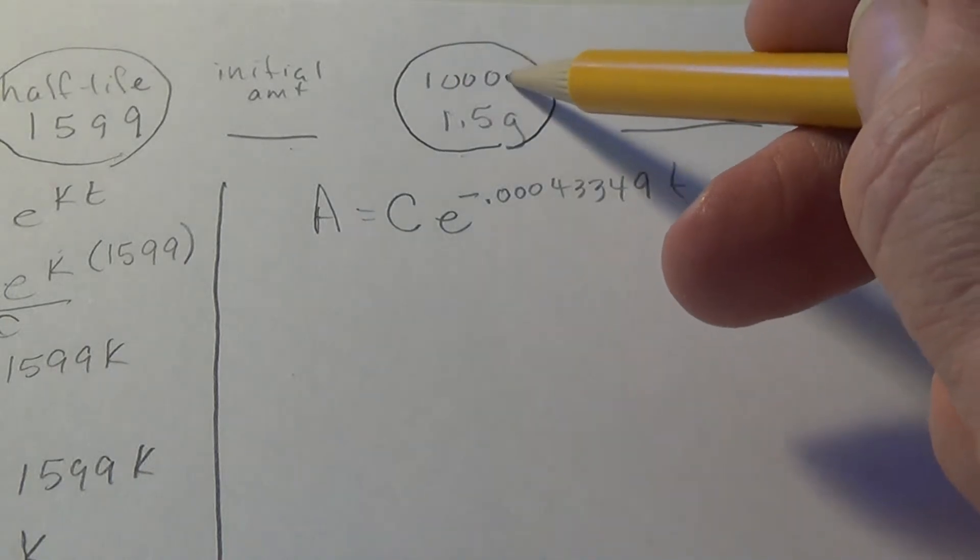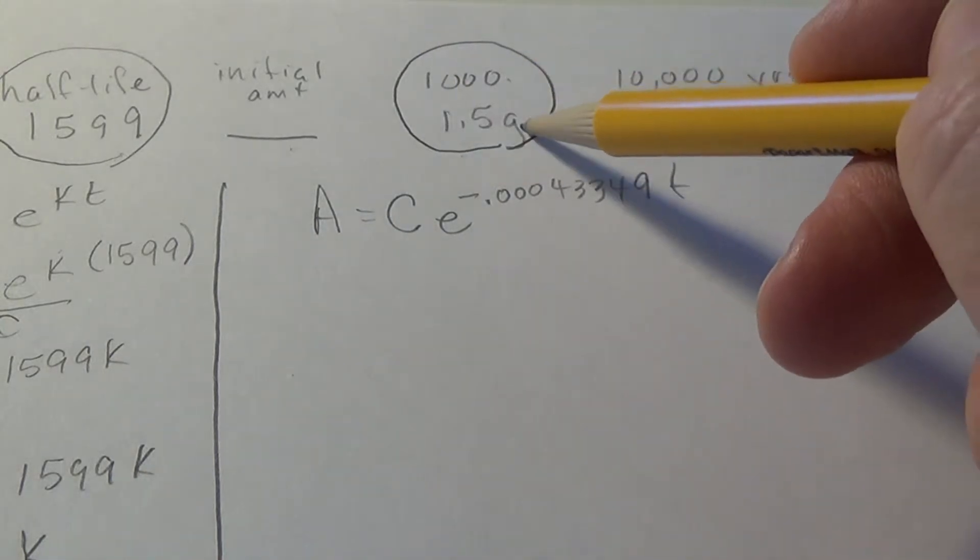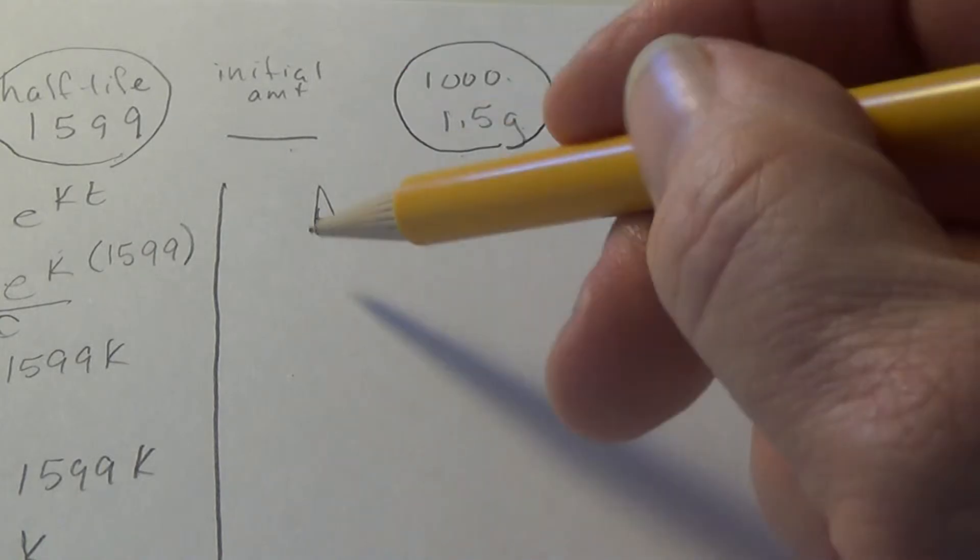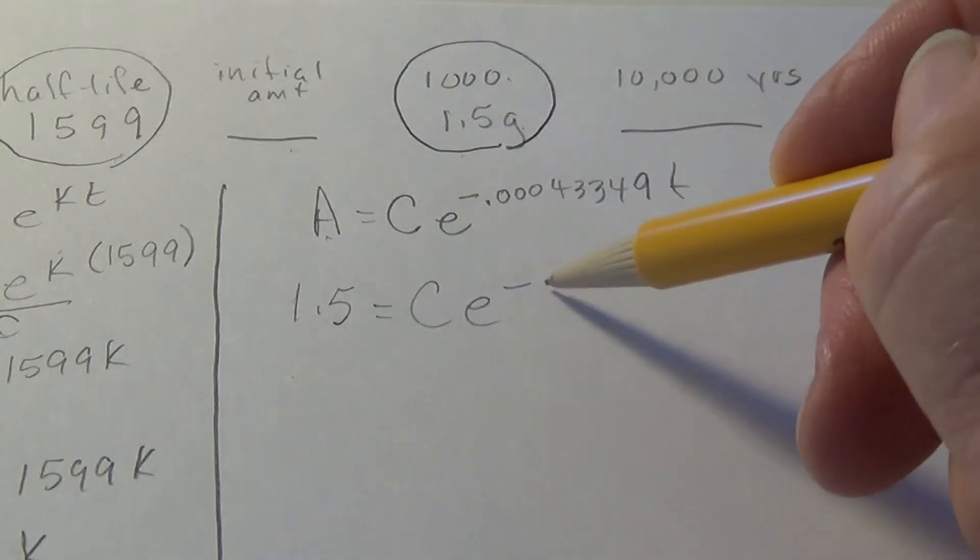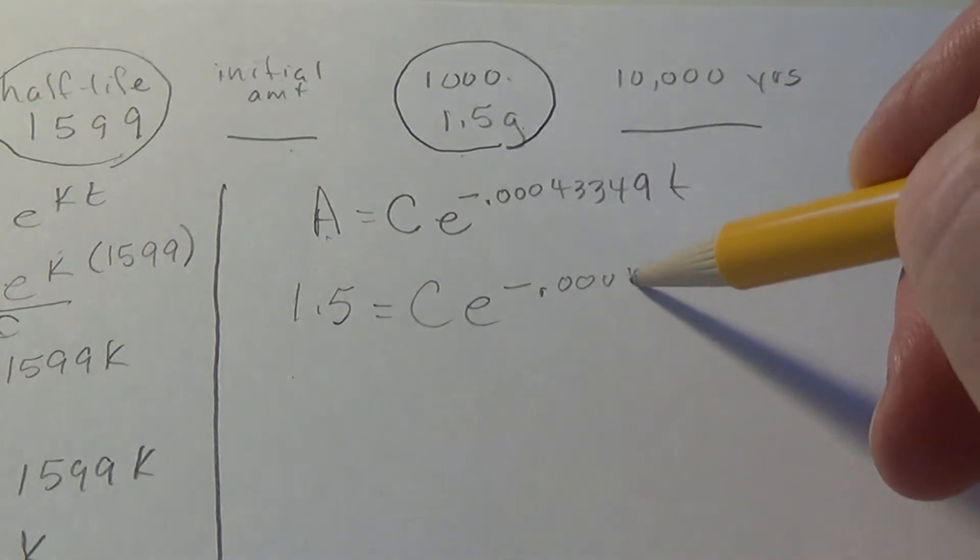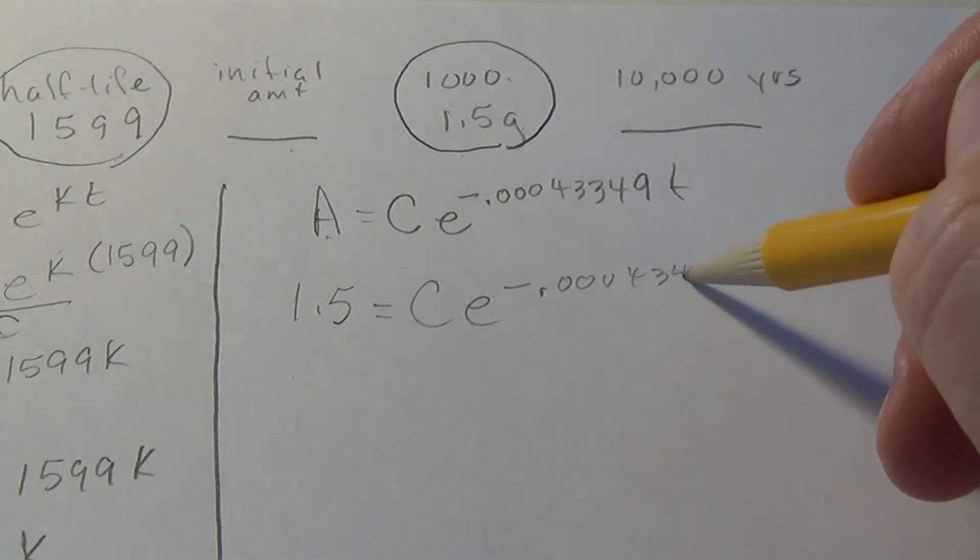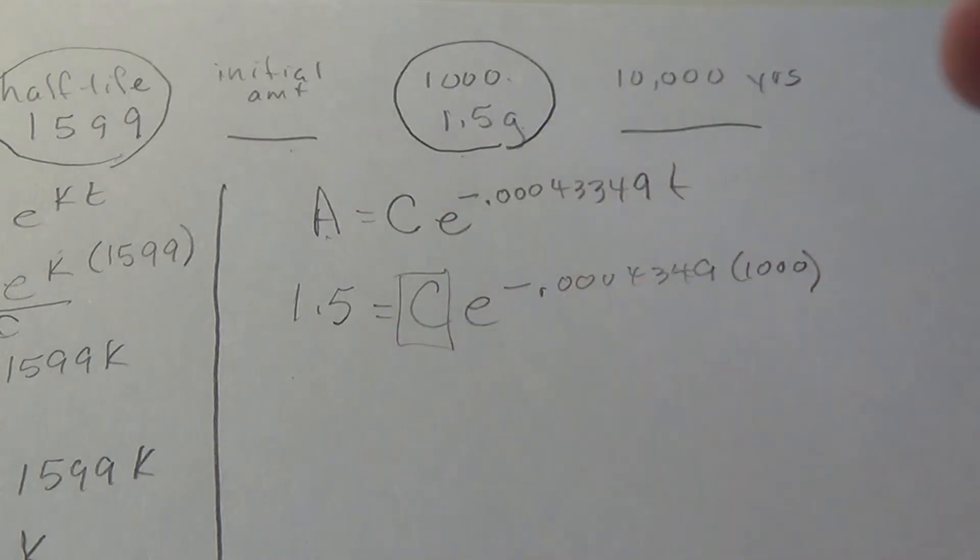So this says at year 1,000 the amount is 1.5 grams. So under amount, I put 1.5 equals C, E to the minus 0.00043349, and now 1,000. This is enough information, finally, to find C.